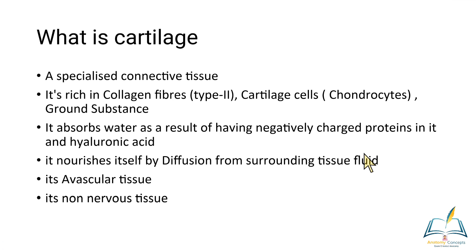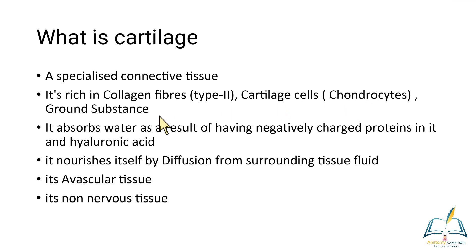Cartilage is a specialized connective tissue rich in collagen type 2 — this is an MCQ point you should remember. The collagen fiber type present in majority of cartilages is type 2. Cartilage cells include chondrocytes, chondroblasts, and chondro-progenitor cells. The ground substance contains negatively charged proteins and hyaluronic acid as a major component, which is why they absorb water.